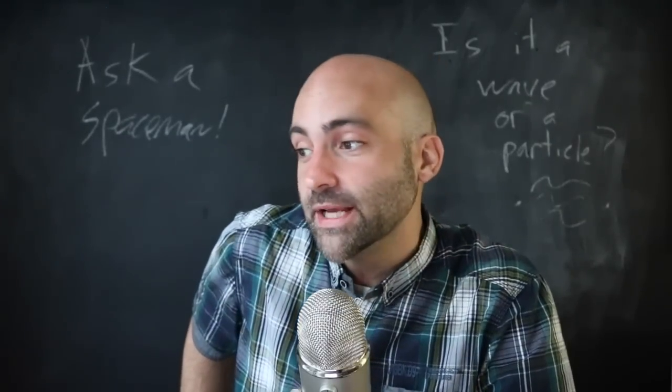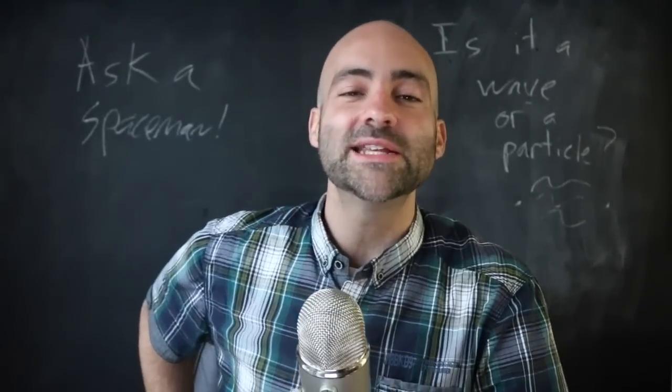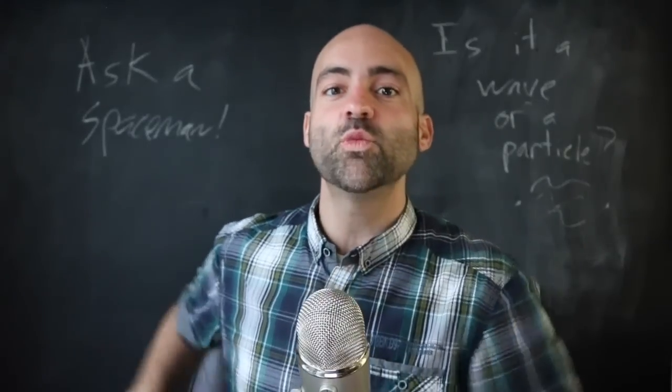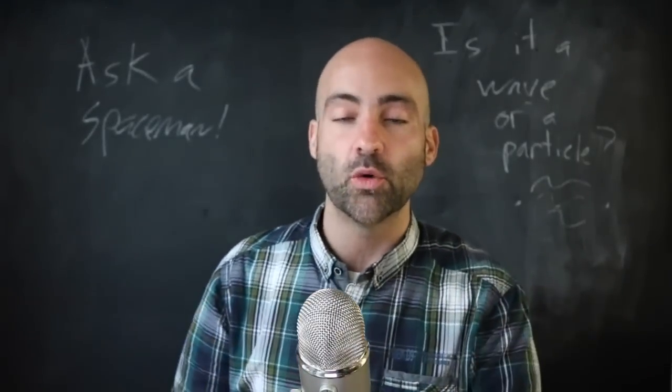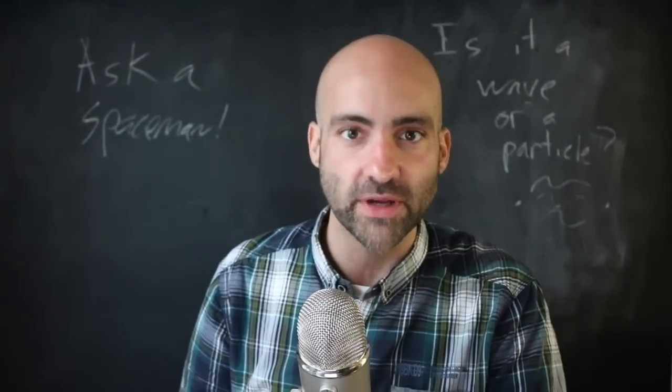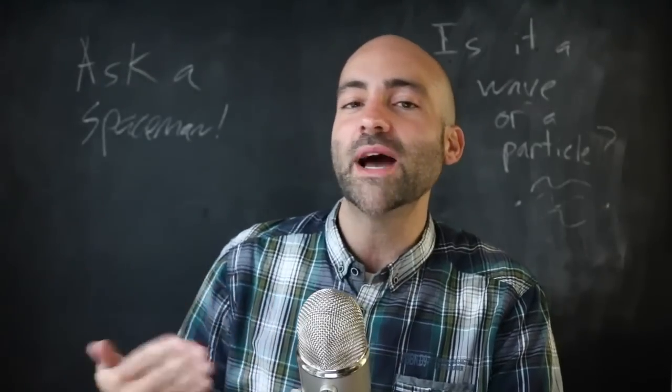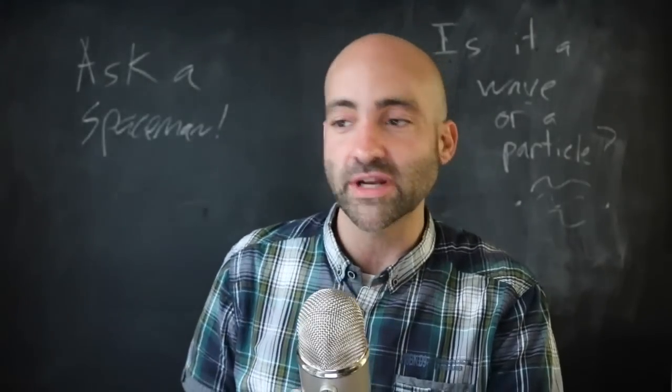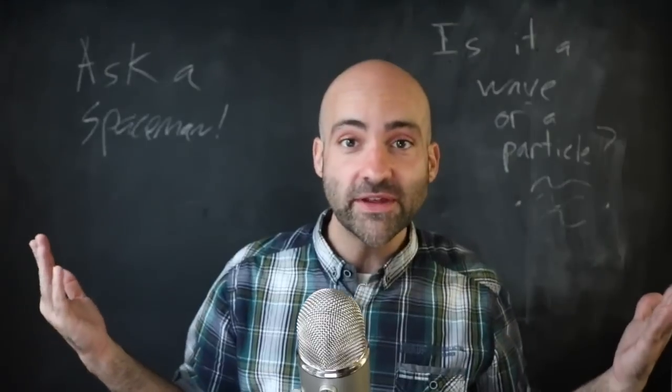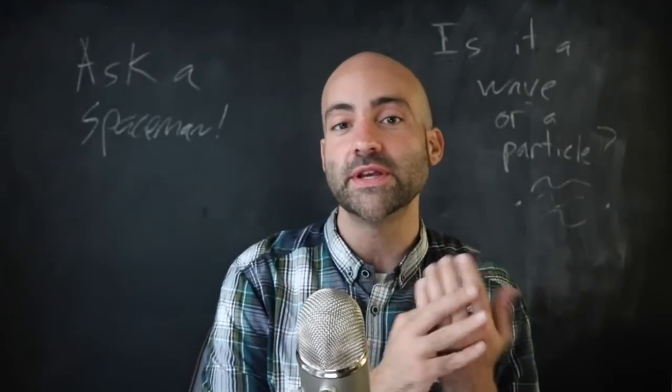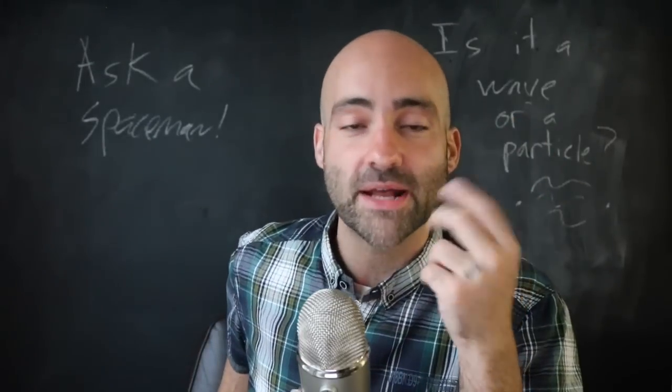That's the Copenhagen interpretation, that the thing that is waving, the thing that is wiggling when an electron or any particle is moving around is a wave of probability. It's a wave of where you might find it the next time you look and those waves can do all sorts of wavy things, like interfere with each other and that's how you get patterns like this.